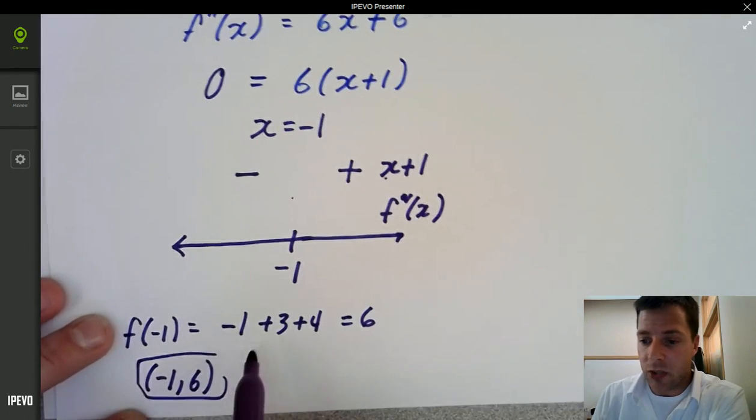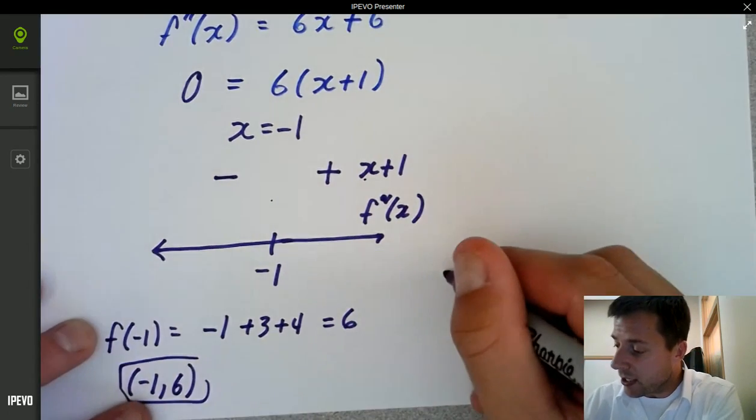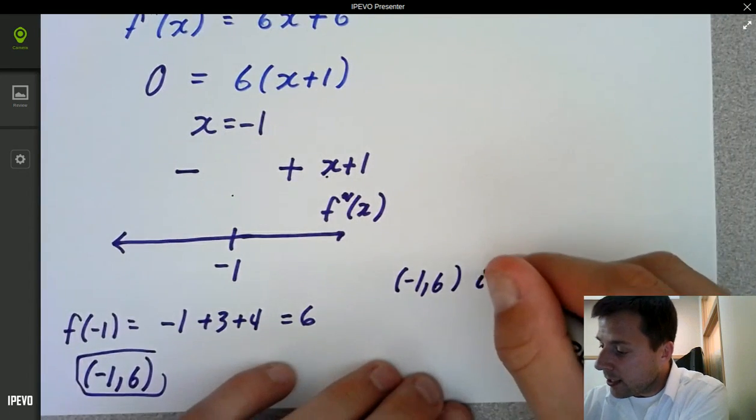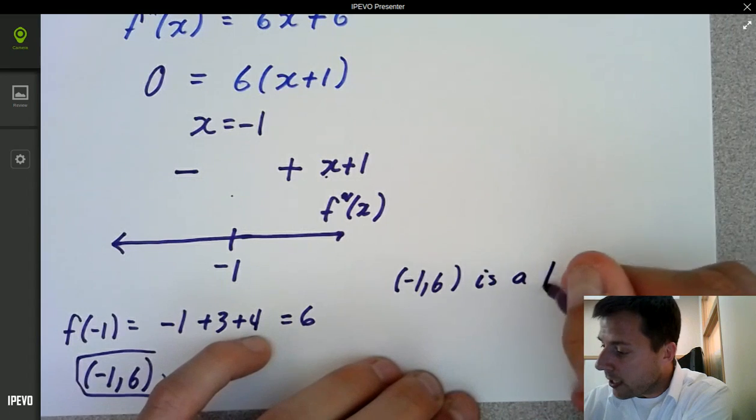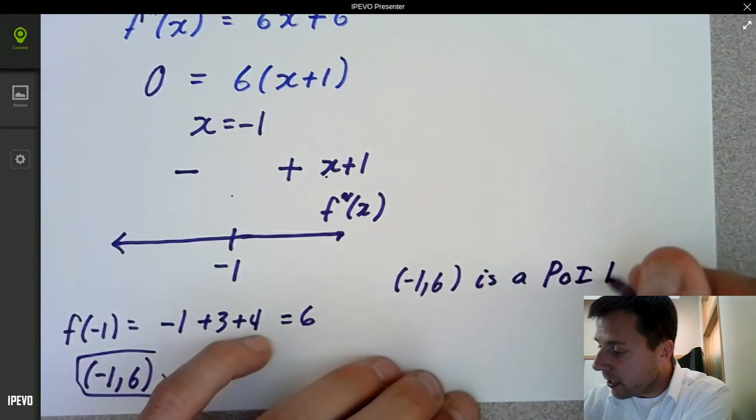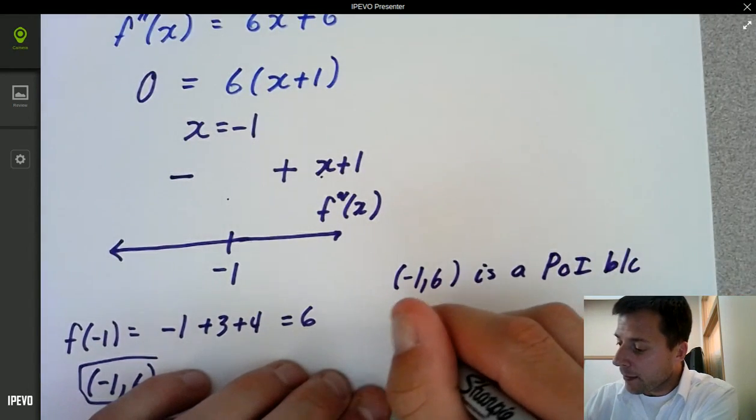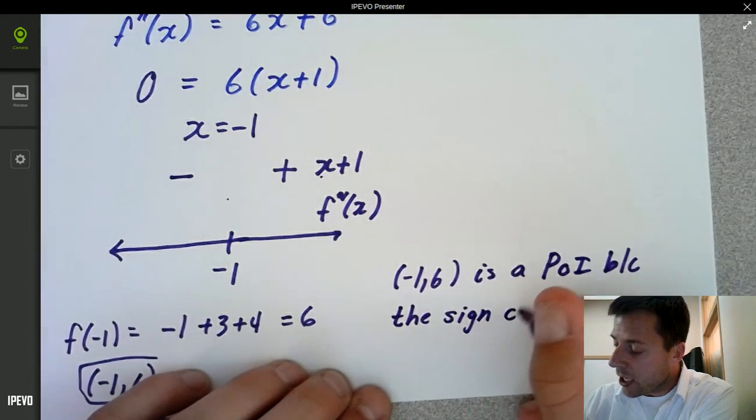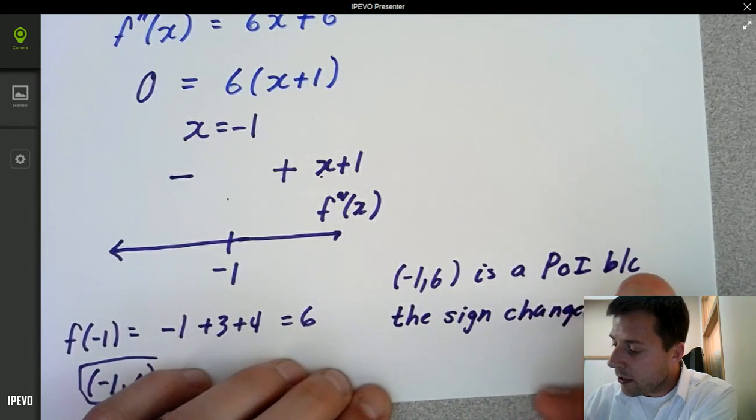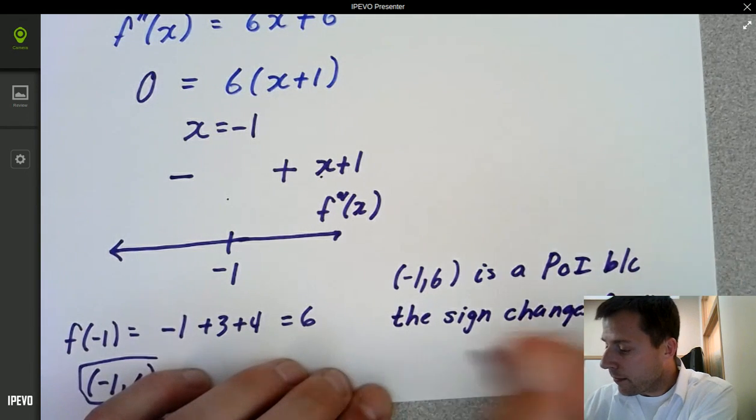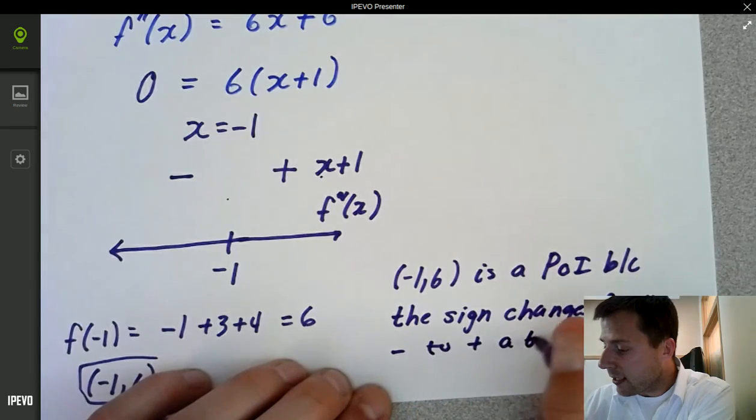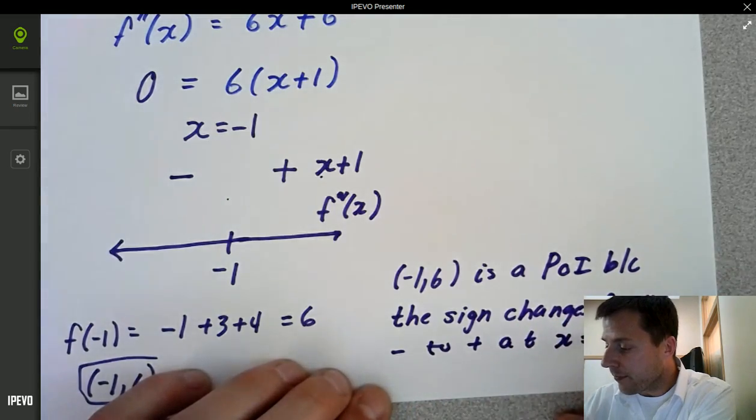So the point of inflection is going to be at negative 1, 6, by plugging that value back into it. It is a point of inflection, so negative 1, 6 is a point of inflection because the sign changes from negative to positive at x equals negative 1.